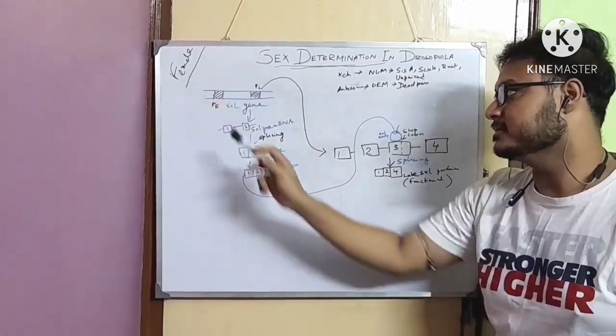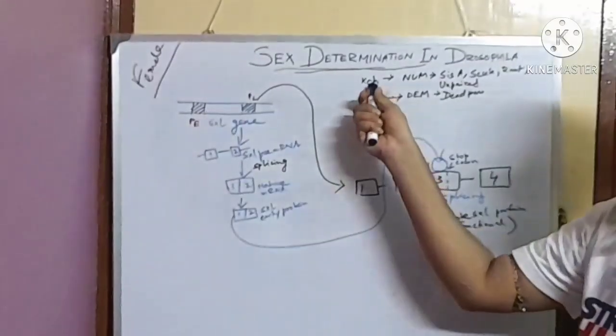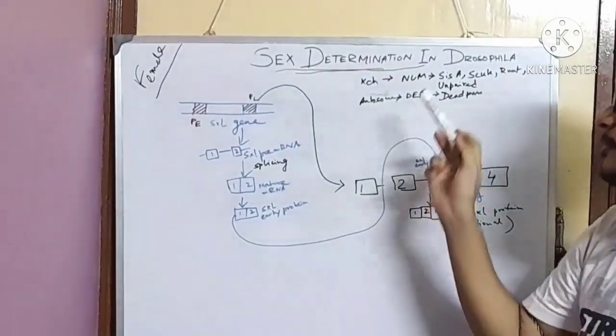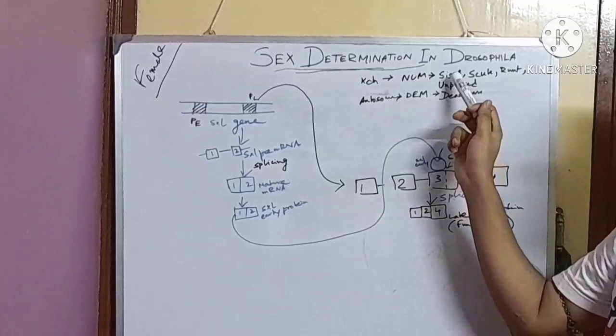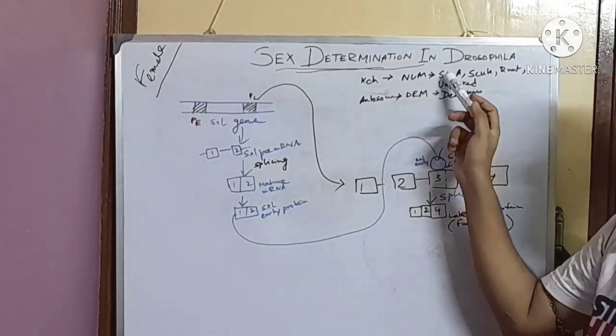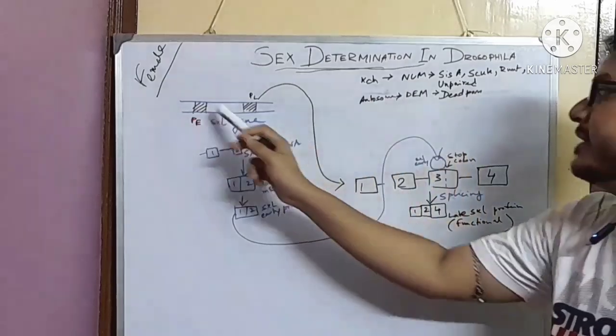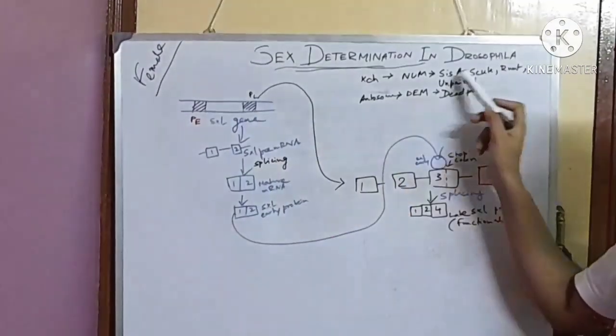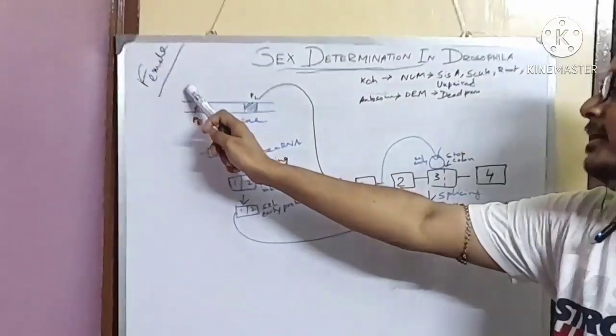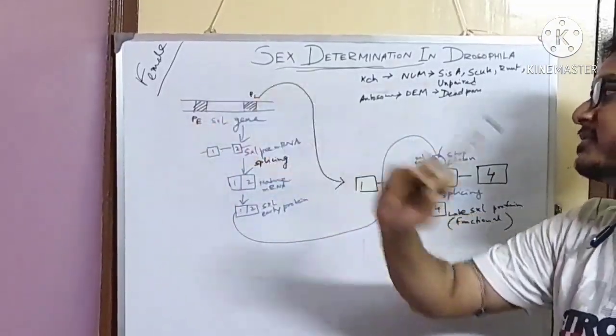At first, X chromosomes produce a few transcription factors or proteins called sisA, scute, runt, or unpaired. They bind to the promoter early and activate the transcription.